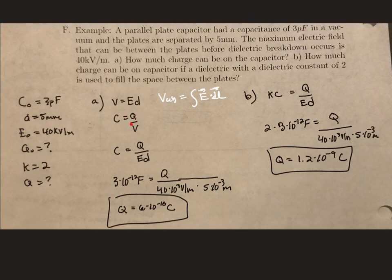We also know capacitance is the ratio of charge to potential, or voltage. So I can make the substitution for the voltage here. I know the capacitance is 3 times 10 to the minus 12 farads. I know the electric field strength is 40 times 10 to the 3 volts per meter. And I know the distance between the plates is 5 times 10 to the minus 3 meters. So that's a max charge of 6 times 10 to the minus 10 coulombs.